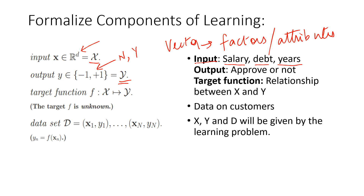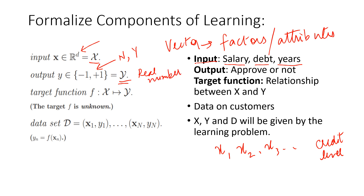I can have more than two classes or categories, or I can have a continuous outcome. Think of the credit problem such that I'm interested in finding the exact credit level for a customer. I'll have all those factors like salary x1, debt x2, years of residence x3, and so on, and then I want to predict the actual credit level for that customer. Credit level is a continuous number, which means this is going to be a continuous output — it won't be categorical, but rather some real number. So that's also a valid possibility.